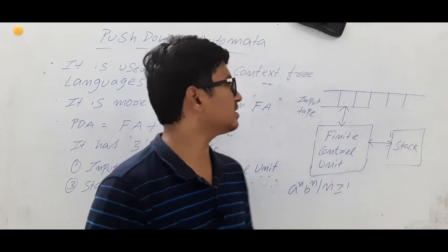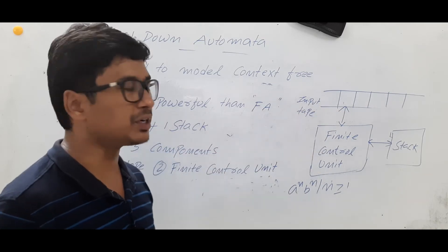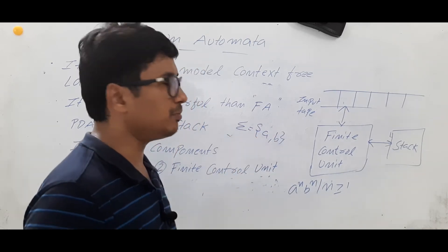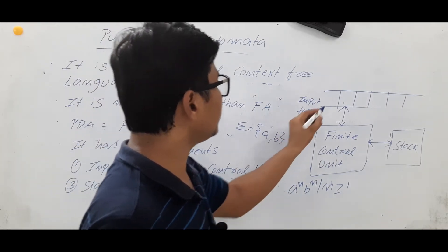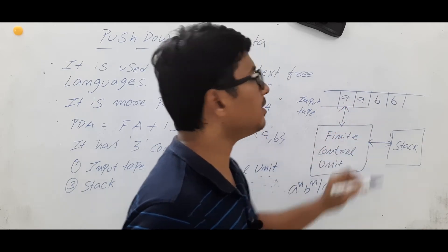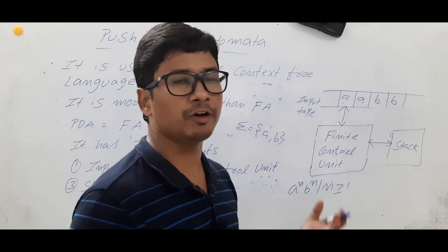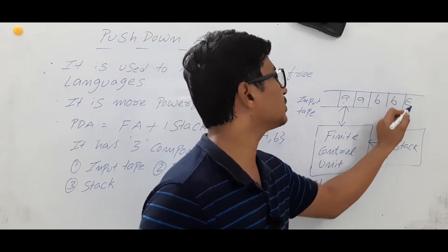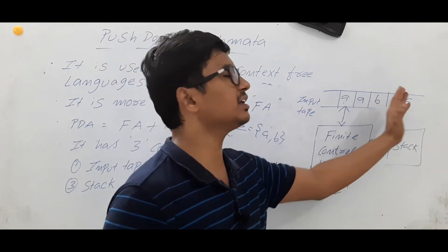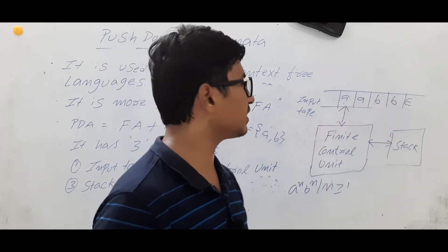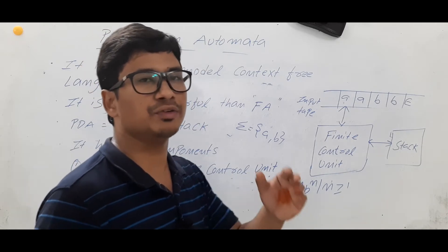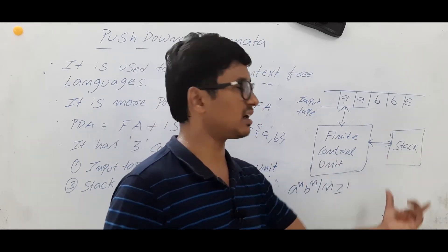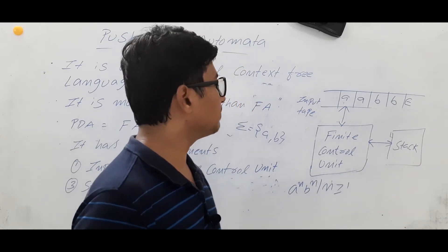The pushdown automata has three components: one is the input tape, the finite control unit, and a stack. These things I have represented using a diagram. The input tape contains the input string — for example, with alphabets A and B, a string like AABB. For this AABB we want to check whether it is accepted or not. Remember, every string should end with an epsilon, which is used to identify that the string is completed. The finite control unit consists of the initial state, final state, intermediate states, and all the transitions.